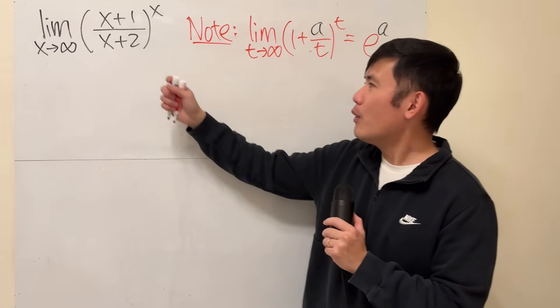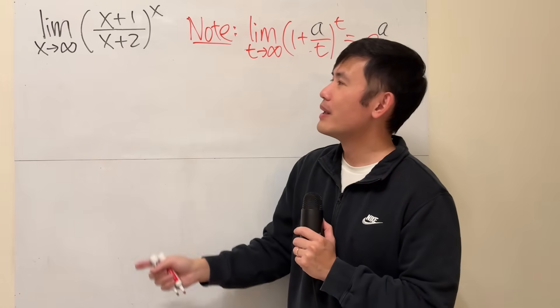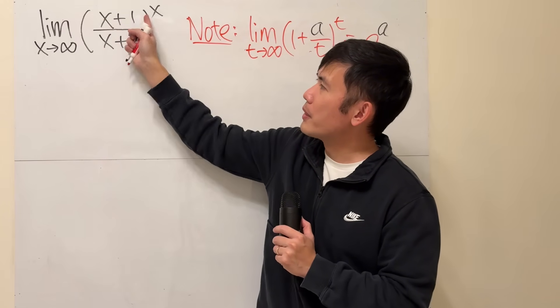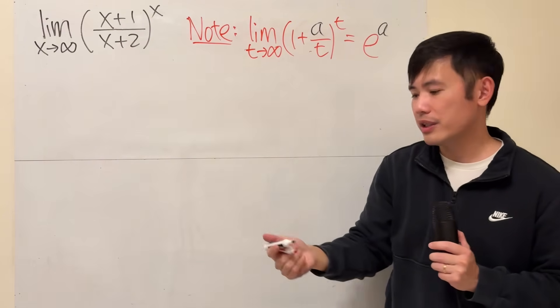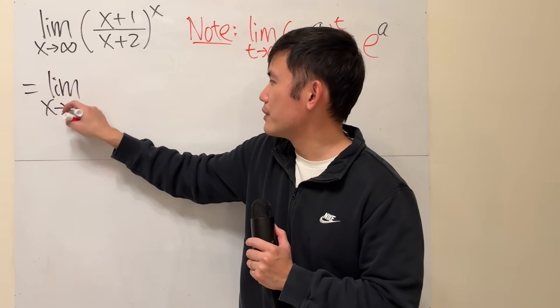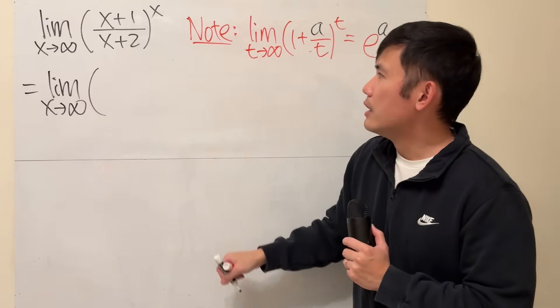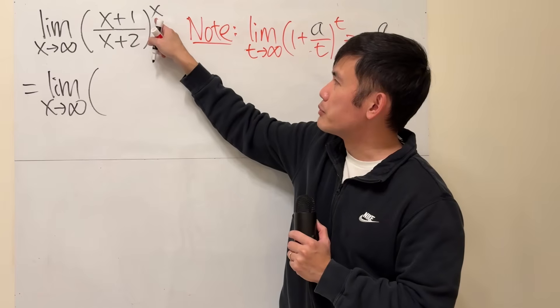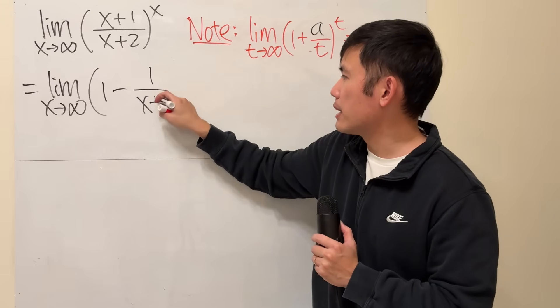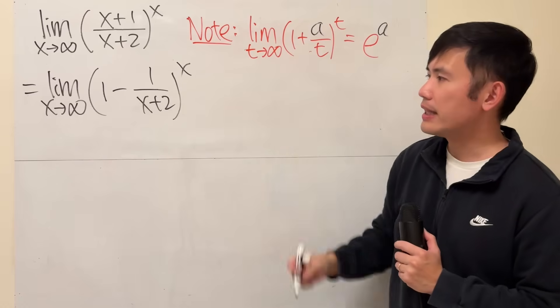So now, how are we going to utilize this? It's not so bad, because the inside here is just a polynomial over polynomial, so we can do a quick division. The limit is x approaching infinity. If you just add 1 and subtract 1, you end up with 1 minus 1 over x plus 2, and then raised to the x power like that.